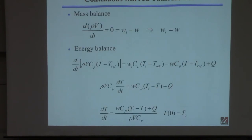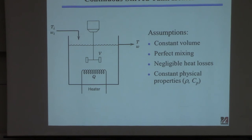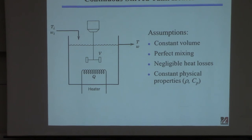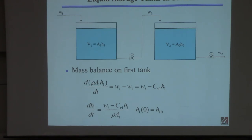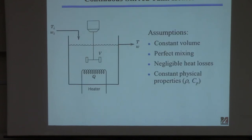Now we need to write an energy balance. When writing a model, the first step is to identify which balances are needed. For the single tank with no reaction: do we need a mass balance? Yes, always. A component balance? No components or reaction. An energy balance? No heat involved. For the heated tank: mass balance always, no component balance needed, but yes to energy balance since we're adding heat and the inlet and outlet temperatures differ.